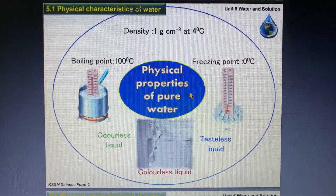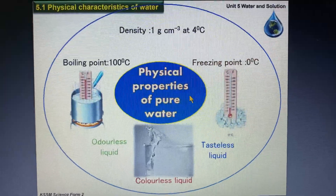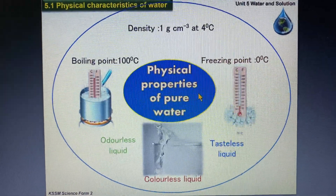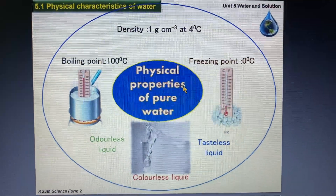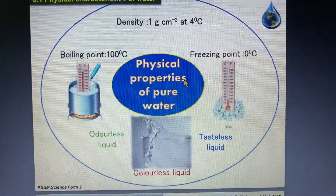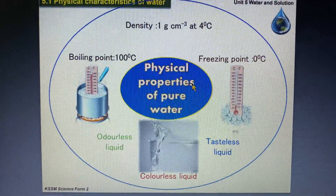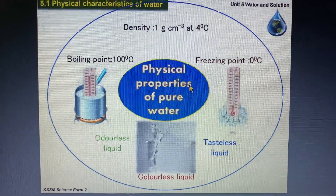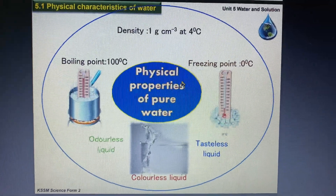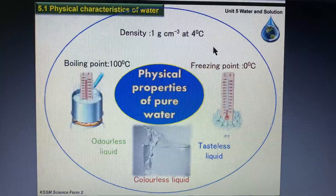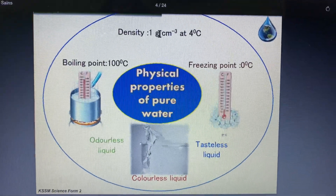Let's start with the physical properties of pure water. What do we mean by pure water? Pure water should be H2O — a complete H2O water without any presence of impurities. For example, tap water is not pure water. Pure water is normally obtained by distillation; it is a pure component of H2O.